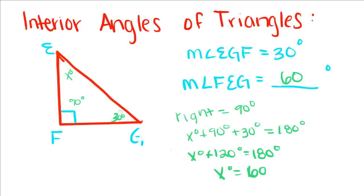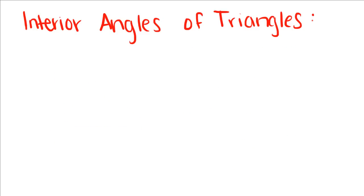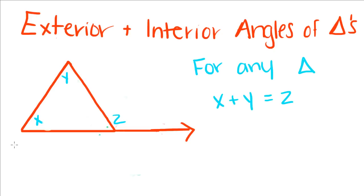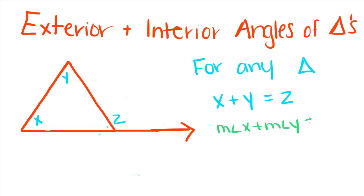Now that we know that property, we're going to look at the exterior and interior angles of a triangle and see how they relate to one another. For any triangle, x plus y is equal to the measure of Z. So the measure of angle X plus the measure of angle Y is equal to the measure of angle Z.